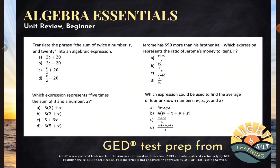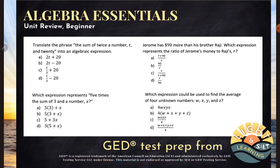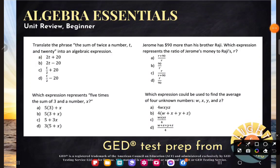First example says, translate the phrase, the sum of twice a number T and 20. Well, we learned quite some time ago what the word sum means, right? A sum is an addition expression or its simplified solution. So I'm expecting to add some things.